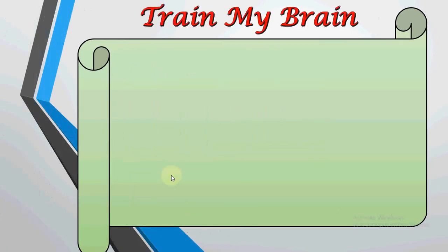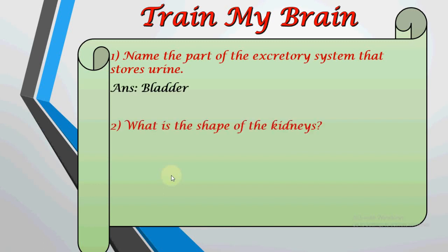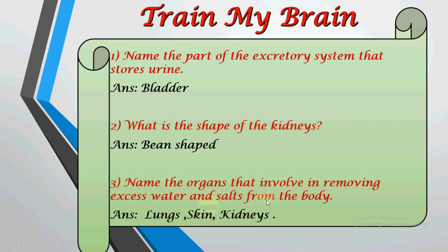Now it's time to train your brain. First question: name the part of the excretory system that stores urine. The correct answer is the urinary bladder. Next question: what is the shape of the kidneys? The correct answer is bean-shaped. Next question: name the organs involved in removing excess water and salts from the body. The answer is lungs, skin, and kidneys.